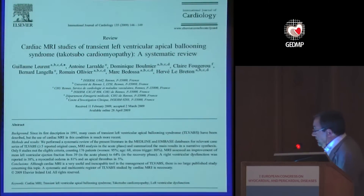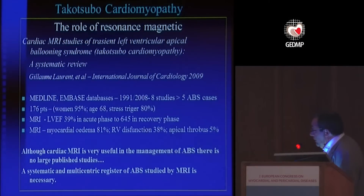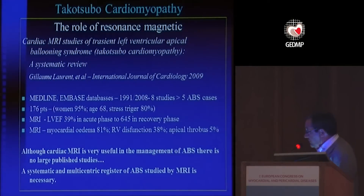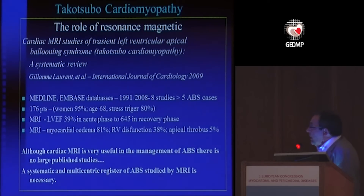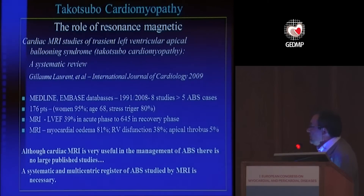A systematic review searching MEDLINE and EMBASE databases found eight studies with more than five ABS patients. Cardiac MRI showed very depressed ejection fraction in the acute phase, and revealed myocardial edema in some cases, right ventricular dysfunction — which is a new finding — and apical thrombus. Although cardiac MRI is very useful in the management of apical balloon syndrome, there are no large published studies, and a systematic multicentric registry of ABS studied by MRI is necessary.